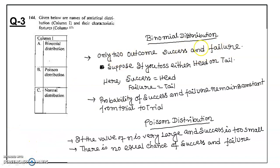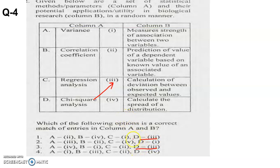Only two outcomes — success and failure — in binomial distribution. For example, tossing a coin: head is success, tail is failure. The probability of success and failure remains constant from trial to trial. In Poisson distribution, n is very large and probability of success is very small — no equal chance of success and failure. Variance calculates the spread of a distribution. Chi-square analysis calculates the deviation between observed and expected values.